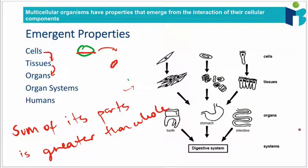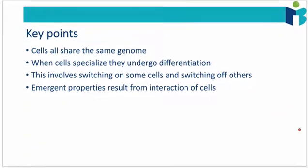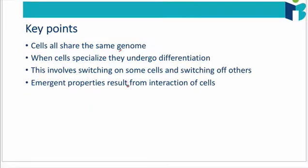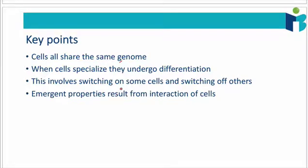The key points to take from this video: all cells in the body share the exact same genome, which is all the genetic material. In order to create specialized cells we need to undergo a process known as differentiation, which involves switching on some genes and switching off others. This results in what we call emergent properties. I hope that made sense.